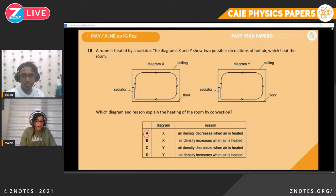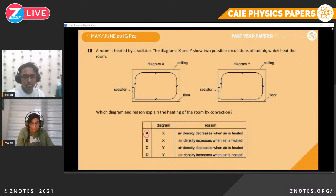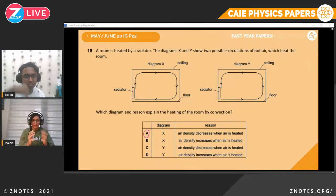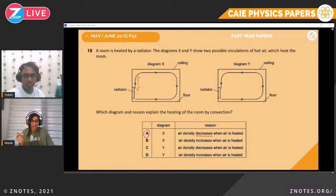Question eighteen. A room is heated by a radiator. Which diagram and reason explain the heating of the room by convection? When air is heated, its density decreases and it floats upward. Diagram X makes more sense — the radiator heats the air and it rises. So the answer is X, and the reason is that air density decreases when air is heated.